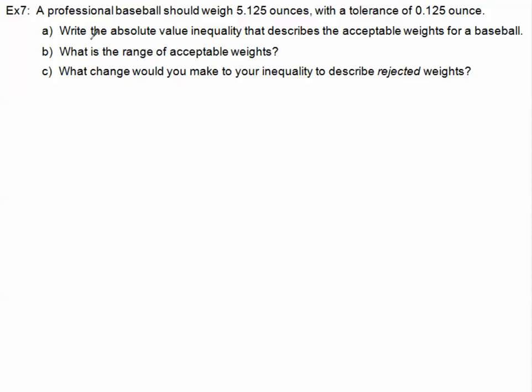Part A, write the absolute value inequality that describes the acceptable weights for a baseball. Let's first write in words what this model would look like. We're talking about absolute value. What happens is we have our actual weight will come first, and then we will subtract our average weight. And that's what's going to be inside our absolute value. Then we would have a less than or equal to, and then the tolerance goes out here on the outside.